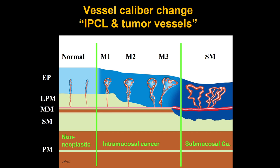Roughly speaking, this is a very simple classification: non-neoplastic, intramucosal, and submucosal cancer. Of course, in the Western world, intramucosal cancer is called high-grade dysplasia.